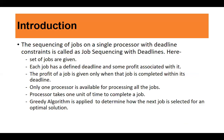The sequencing of jobs on a single processor with deadline constraints is called job sequencing with deadlines. Here, instead of a single processor, you can think of it as a single machine or a single person — like the mechanic. Each job has a deadline, and the job must be completed within that deadline.